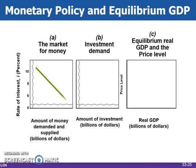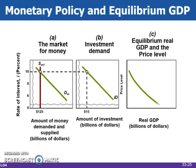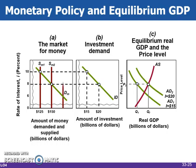An expansionary monetary policy that shifts the money supply curve rightward in panel A lowers the interest rate from 10% to 8%, which results in investment spending in panel B increasing from $15 to $20 billion, and causes aggregate demand to increase. This shifts the aggregate demand curve rightward from AD1 to AD2 in panel C, so that real output rises to the full employment level QF.